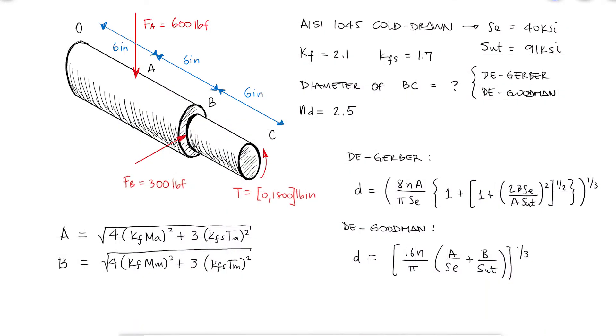Since the torque will fluctuate between 0 and 1800 lb-inches, the average or mean torque would be 900 lb-inches, and the alternating torque value would also be 900 lb-inches. These torque values are valid for whatever location along the shaft, from O to C.